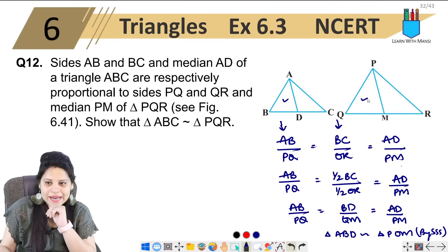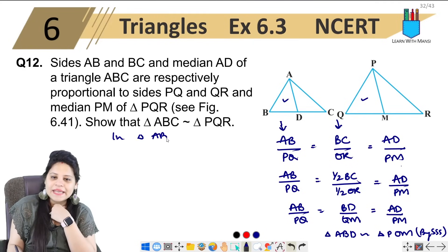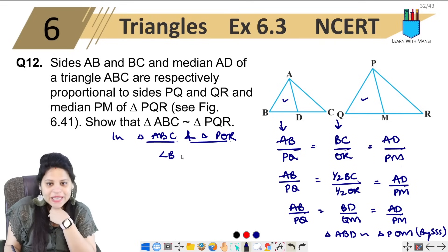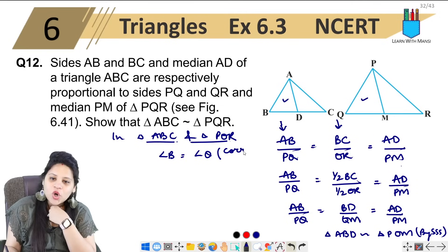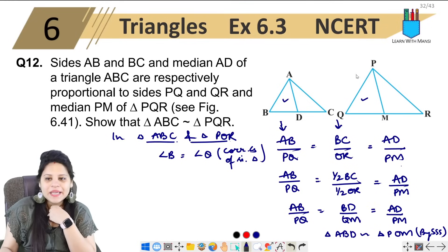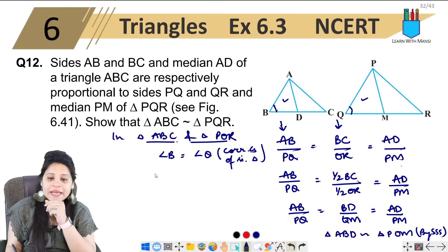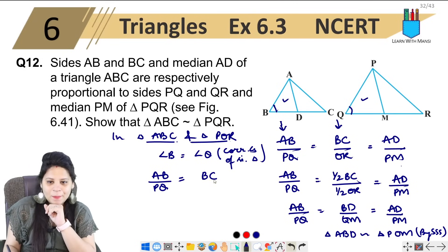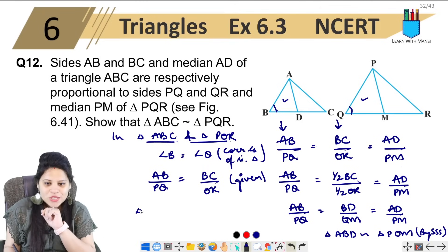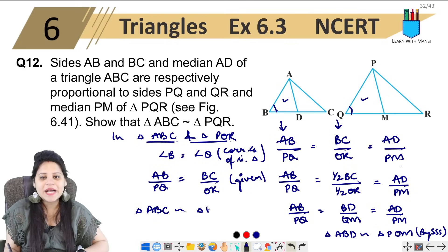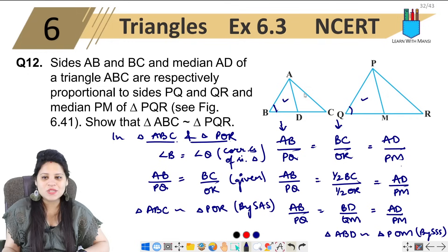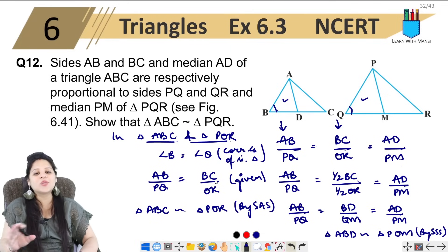Now we have proved that triangle ABD and triangle PQM are similar. So in triangle ABC and triangle PQR, angle B equals angle Q — because they are corresponding angles of the similar triangles ABD and PQM. Next, we are given AB upon PQ equals BC upon QR, and now we have angle B equal to angle Q included between those sides. So triangle ABC is similar to triangle PQR by SAS similarity.